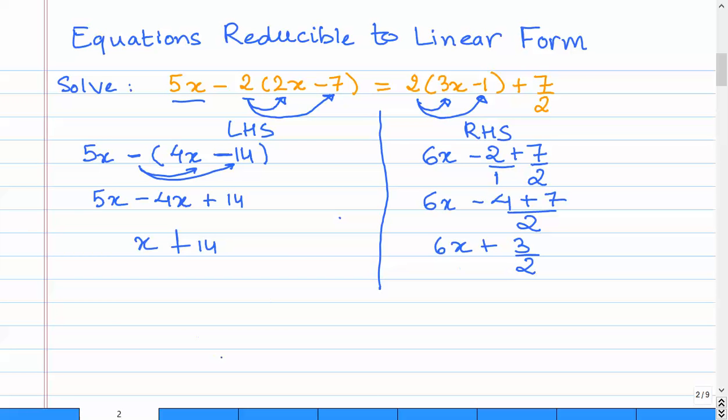So the simplified equation that we now have is x plus 14 equals 6x plus 3 by 2. So if we just pause here before moving on to solving this equation, you found out how we just tackled it a bit differently by simplifying the left-hand side and the right-hand side as we got it over here. That is, x plus 14 is equal to 6x plus 3 by 2.